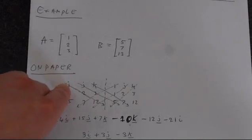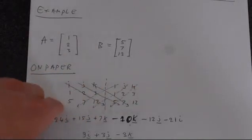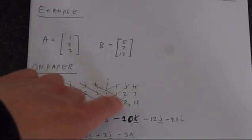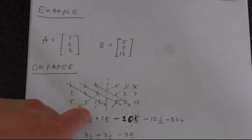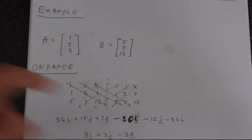So on paper, we would write out this twice with I, J, K, I, J, K, then vector A, 1, 2, 3, vector A again, and then 5, 7, 12, which is vector B and vector B again.